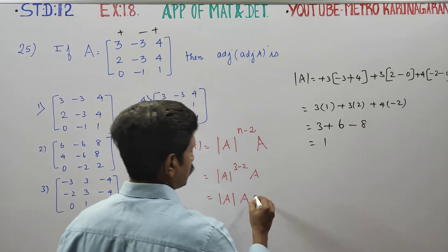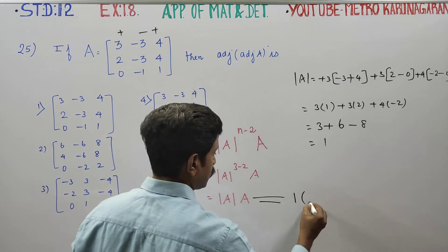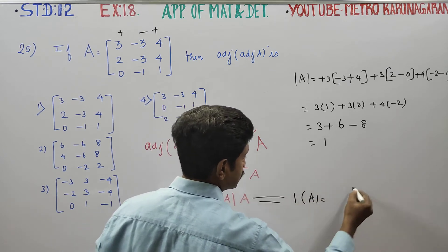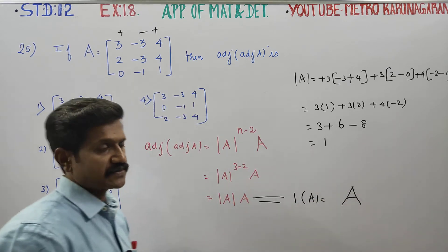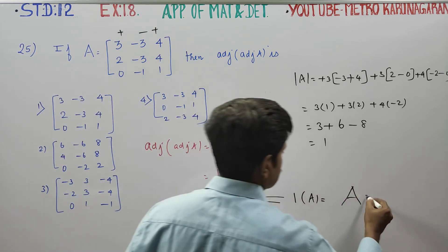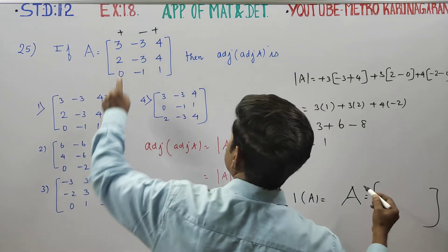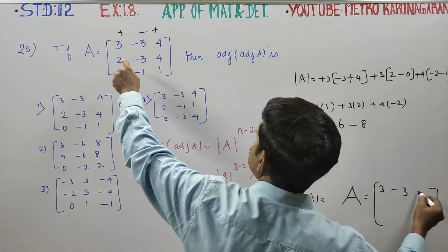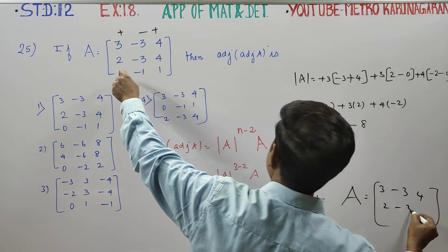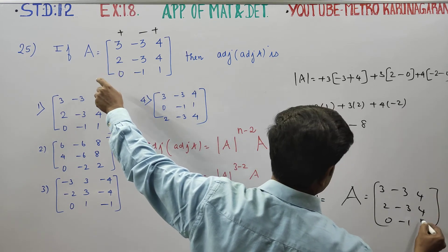In the 1 head you can substitute. Your answer will be 1 into matrix A. Therefore your answer is A matrix. What is my A matrix? A matrix is the given sum. That is 3, minus 3, 4, 2, minus 3, 4, 0, minus 1, 1.